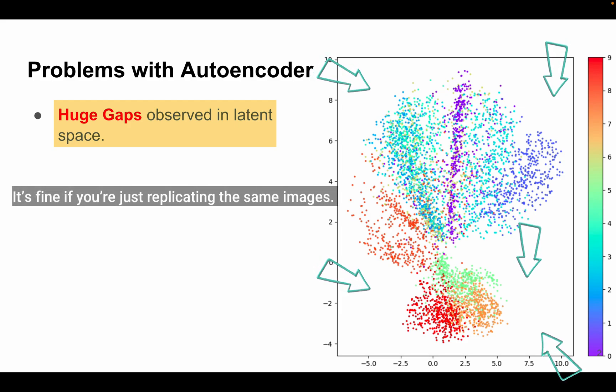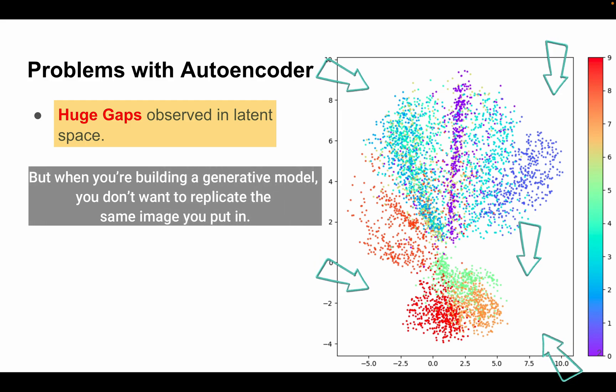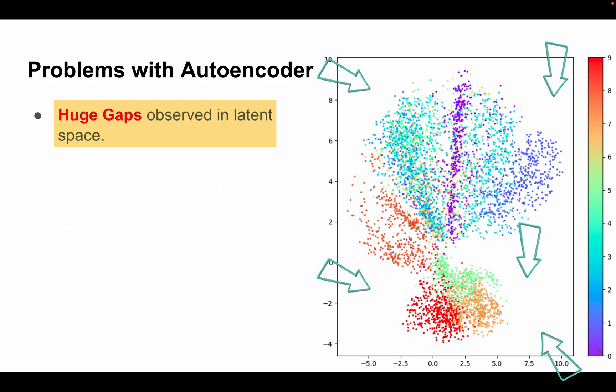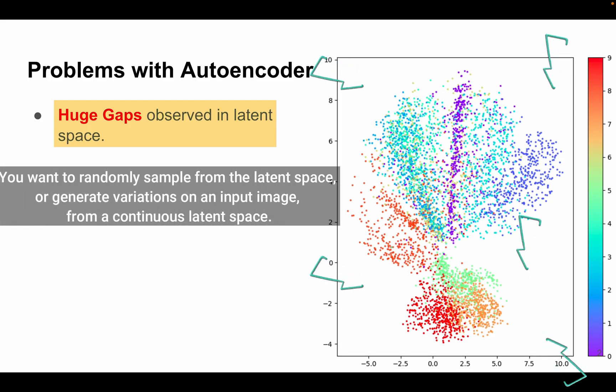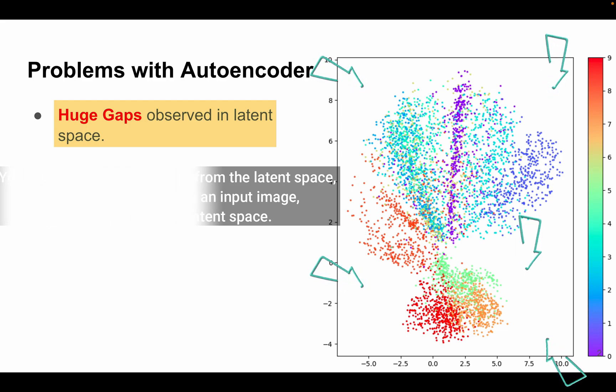Now this is fine if we are just replicating the same images, but as a generative model you don't want the model to replicate the same image that you put in. So we want to randomly sample from the latent space or generate variations of an input image from a continuous latent space.